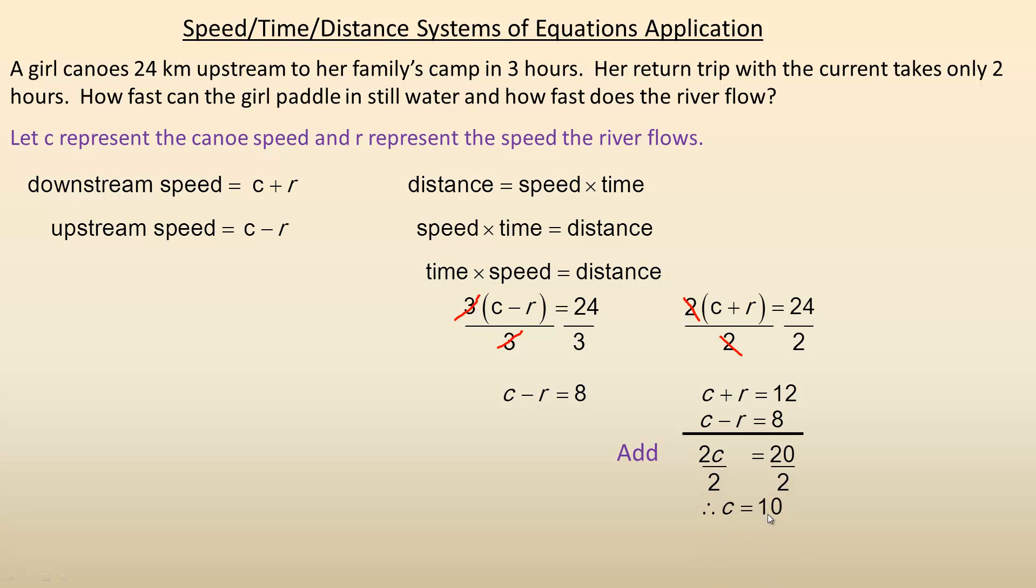So the canoe speed is 10. She is able to paddle 10 kilometers per hour in still water. Now let's find the river speed. I'm going to use this equation and put my 10 right here, so 10 + R equals 12. R would have to be 2.